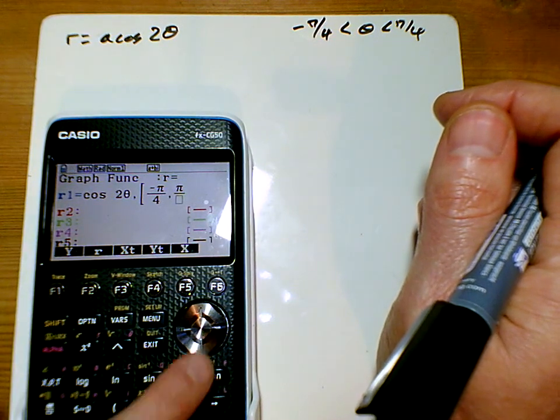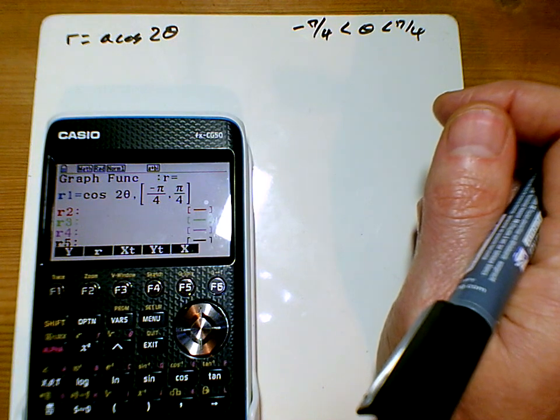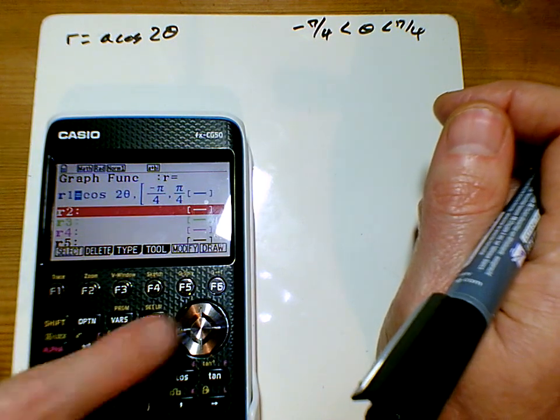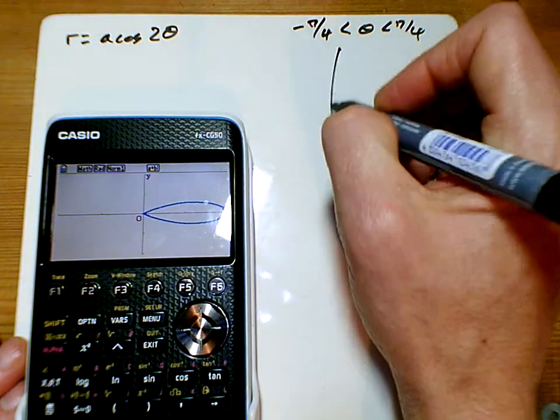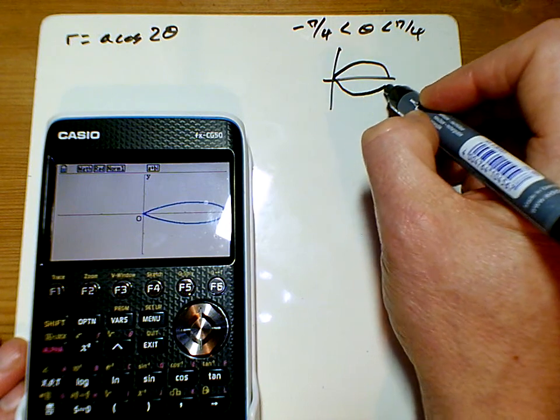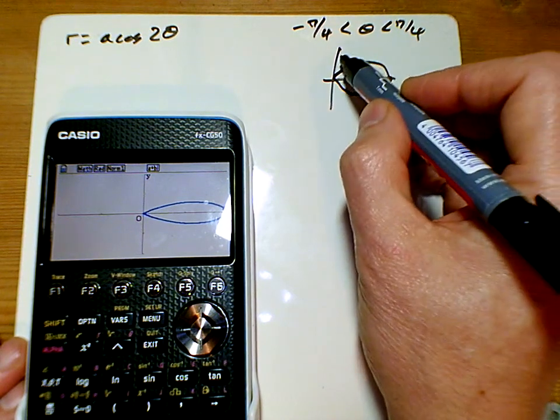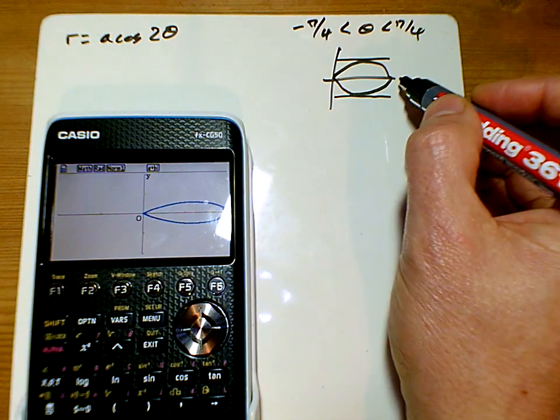So we'll close the square bracket there, and now when we draw that, we're now just getting this small part here. So this is the part we're interested in, and we're looking for the tangents to this that are parallel to the initial line.